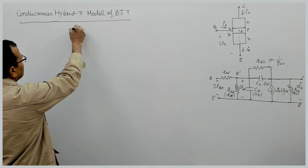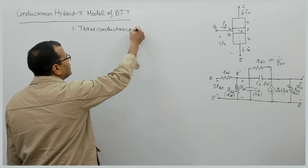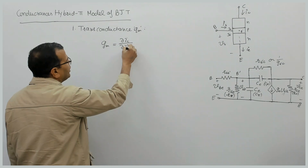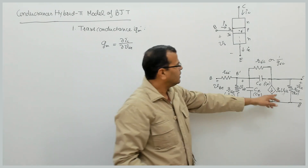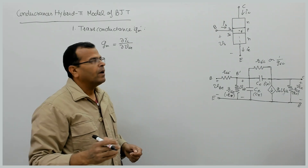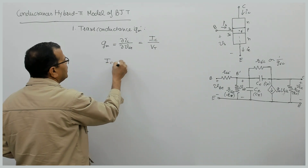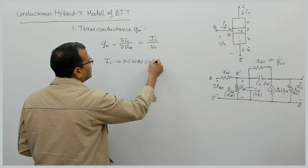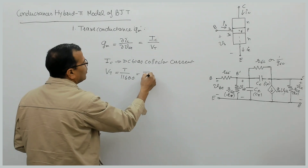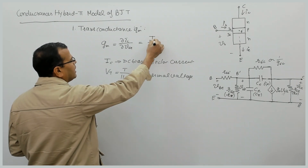We will talk about the different conductances first — that is transconductance. The transconductance of BJT, if you remember, is nothing but the variation in IC with respect to variation in VB dash E, and that is equal to IC by VT, where IC is DC bias collector current. You can refer to my lectures on BJT parameters. VT is T by 11600 and that is called thermal voltage. The transconductance is a function of collector current as well as thermal voltage.